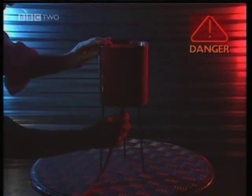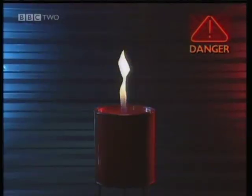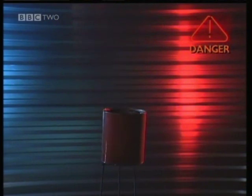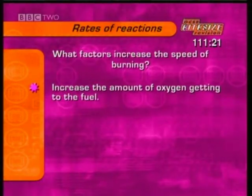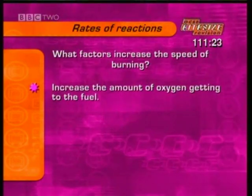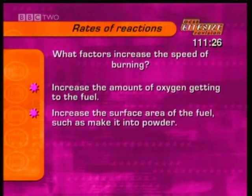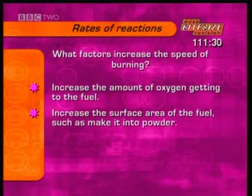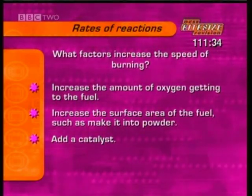This can is filled with natural gas. As the gas burns off at the top, it's replaced by air coming in through the bottom, which mixes with the rest of the gas. The ways shown in the clip to speed up burning were: to increase the amount of oxygen getting to the fuel, to increase the surface area of the fuel by breaking it into smaller pieces or a fine powder, or to add a catalyst, like platinum.